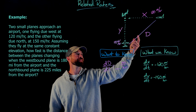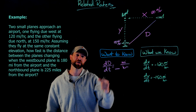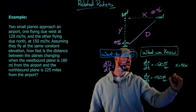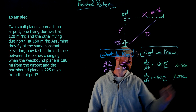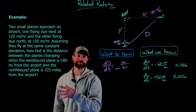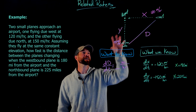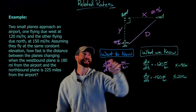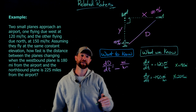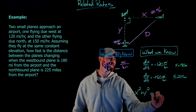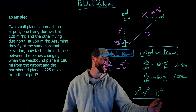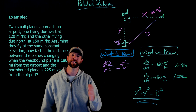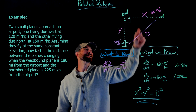We're also told that the first plane is 180 miles from the airport and the second plane is 225 miles from the airport, so x equals 180 miles and y equals 225 miles. The last piece of information — from our picture — is that we're looking at a right triangle, so I'll use the Pythagorean theorem: x squared plus y squared equals d squared. Finding this equation is often the most crucial part of a related rates problem. I chose this relationship because it relates all three values I'm working with.